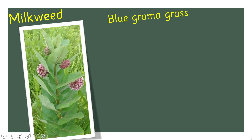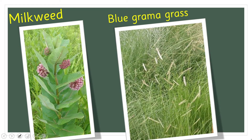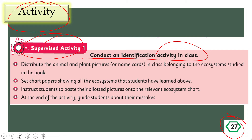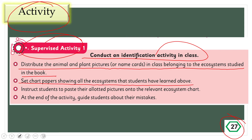Milkweed and blue grama grass are also inhabitants of the grassland ecosystem. Now it's time for a supervised activity, number one, on page 27. Conduct an identification activity: distribute animal and plant pictures belonging to different ecosystems, set up chart papers showing all the ecosystems, instruct students to paste their pictures onto the relevant ecosystem chart, and at the end guide students about their mistakes.